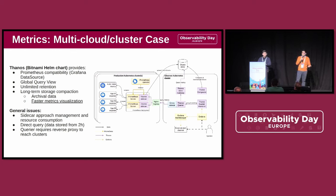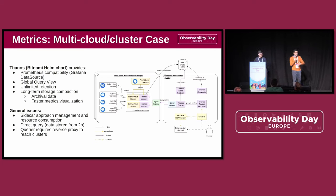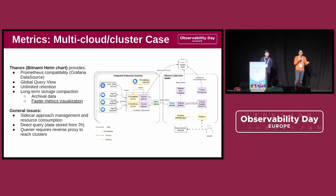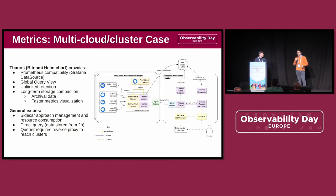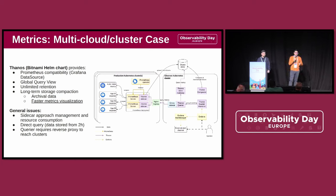Thanos is extending Prometheus while keeping compatibility, so practically it is solving all the previous issues. You can use in Grafana the same Prometheus data source and just point to the Thanos deployment, and it just works. Thanos adds a sidecar with the Prometheus server so that you can scale your Prometheus servers. At the same time, it is able to upload the time series data inside an S3 storage, so you can retrieve this data when you need it, and you can keep all the other Thanos components in a separate cluster.